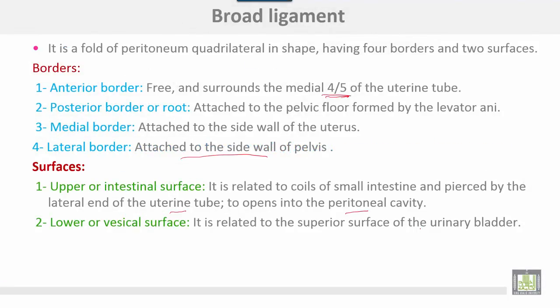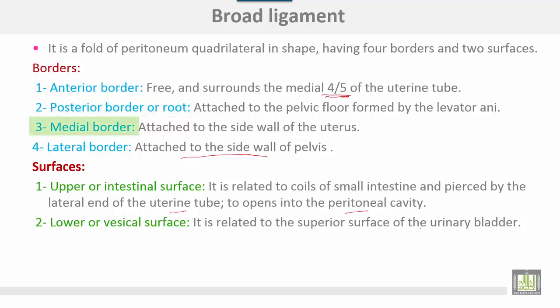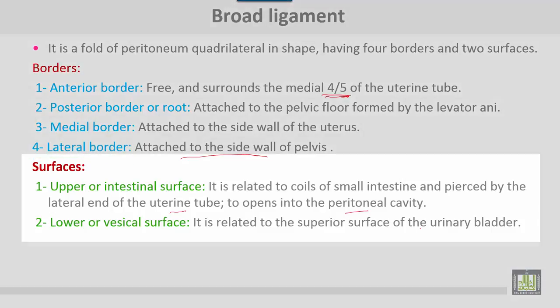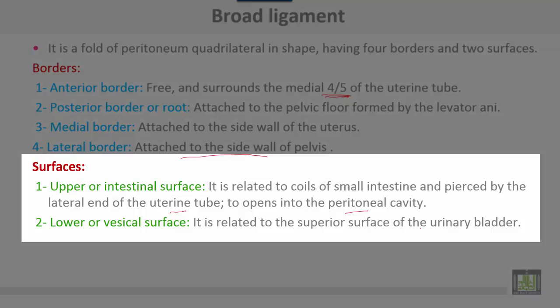The broad ligament is a fold of peritoneum, quadrilateral in shape, having four borders and two surfaces. The anterior border is free and surrounds the medial four-fifths of the uterine tube. The posterior border or root is attached to the pelvic floor formed by levator ani muscles. The medial border is attached to the side wall of the uterus, and the lateral border to the side wall of the pelvis. The upper or intestinal surface is related to coils of small intestine and pierced by the lateral end of the uterine tube, opening into the peritoneal cavity. The lower or vesical surface is related to the superior surface of the urinary bladder.